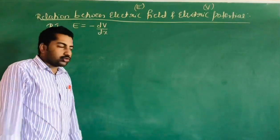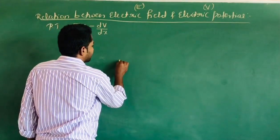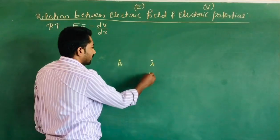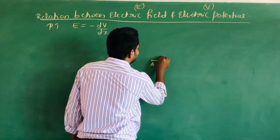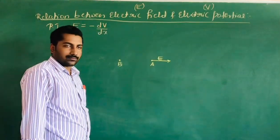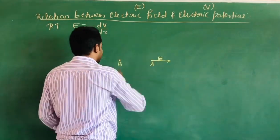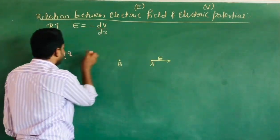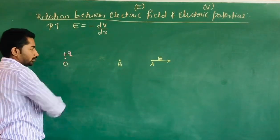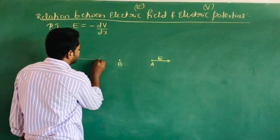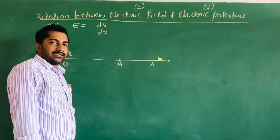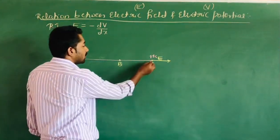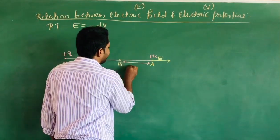Consider two points A and B. The electric field E is produced at point A due to the point charge Q at point O. The amount of unit positive charge, one coulomb, moves from point A to B through a certain distance dx.